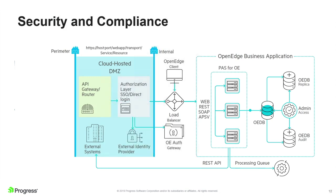You also want to externalize the security and authentication outside of your secure back-end private network. You want to not only route requests through an API gateway, but also authenticate users sending requests through that gateway before they get into your private network. We have technology to do that — we have the Authentication Gateway, and Spring Security on PASOE can use external identity providers.